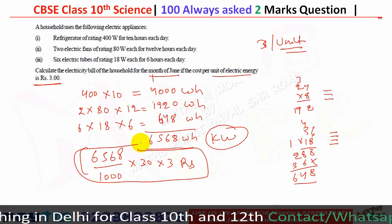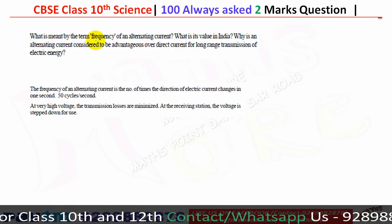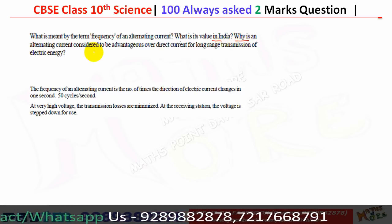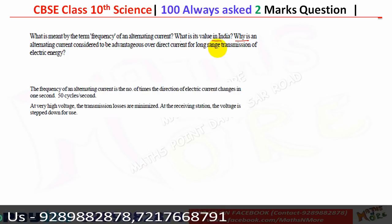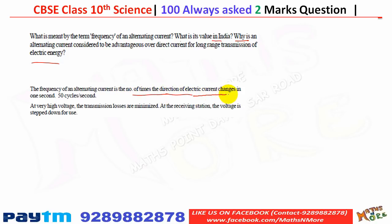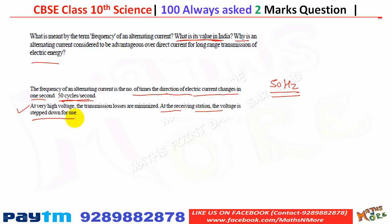The frequency of an alternating current is the number of times the direction of the electrical current changes in one second. In India, the frequency of AC is 50 cycles per second, or 50 hertz. AC is advantageous over DC for long-range transmission because at very high voltage the transmission losses are minimized. At the receiving station the voltage is stepped down for use.